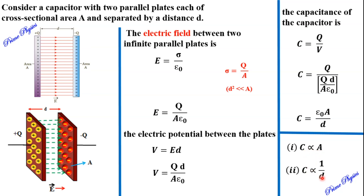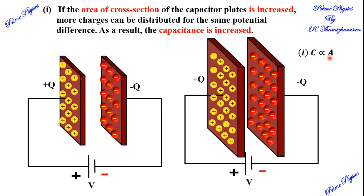C is directly proportional to area A, and C is inversely proportional to D. For the first point — C is directly proportional to A: if we compare two capacitors with identical plates, if the area of the plates is increased, we can store more charge. If charge increases, the capacitance will increase. So if area is increased, capacitance increases — C is directly proportional to the area of the plates.